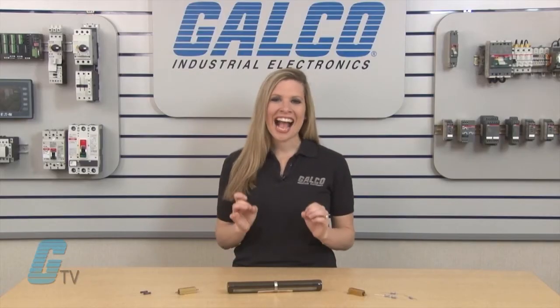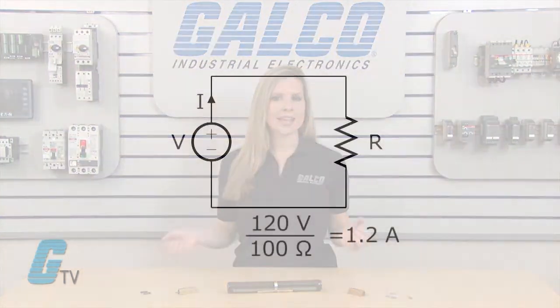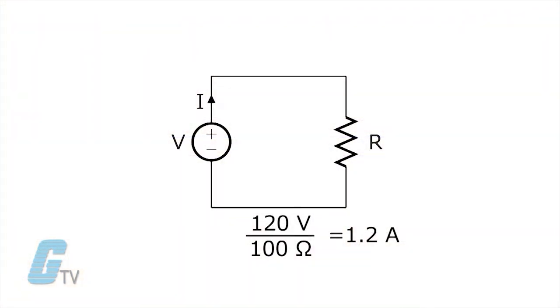With a resistor, a constant is created that proportionally impacts the current. Using the same example of 120 volts but now using 1000 ohms, my amperage would decrease to 0.12 amps.